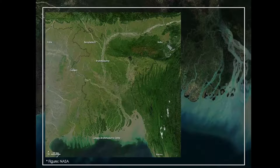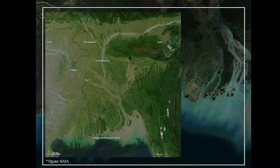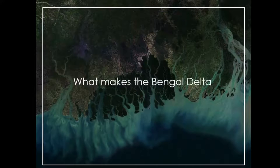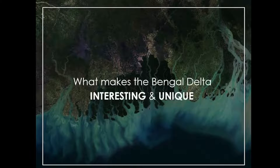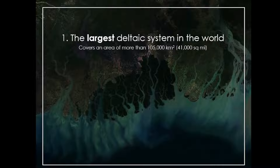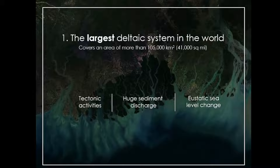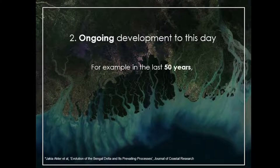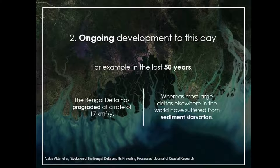Let's start with the picture. What you can see here is the southeastern part of the Indian subcontinent, and the shadowed part right here is a deltaic system called the Bengal Delta. What makes it interesting and unique is that firstly, it is the largest delta system in the world. Tectonic activities, huge sediment discharge, and sea level change have worked together in shaping this delta of such a unique size and sediment reserve.